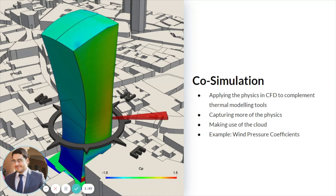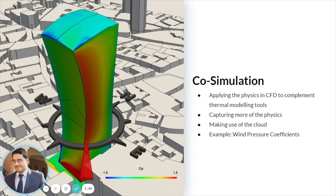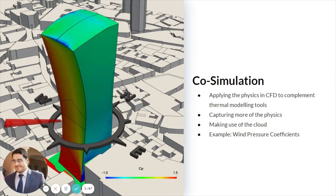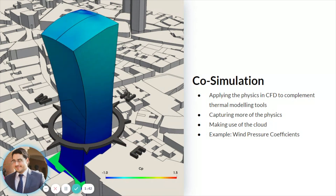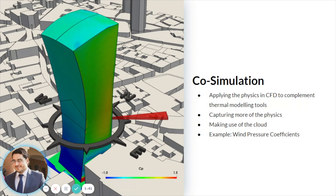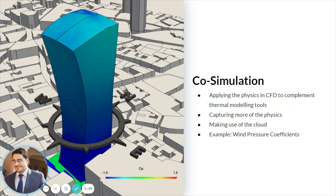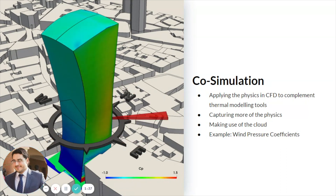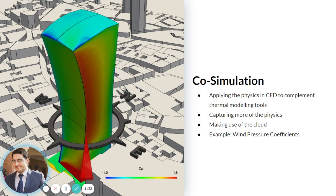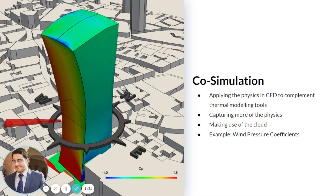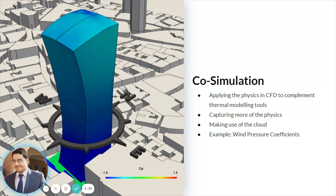We have tons of computing power available, so let's capture more of the physics and model it more explicitly. Let's bring this capability into thermal modeling tools. We have great examples where we've modeled CFD-generated wind pressure coefficients in SimScale and imported them into thermal modeling tools to make the accuracy of the dynamic simulation much better and higher.